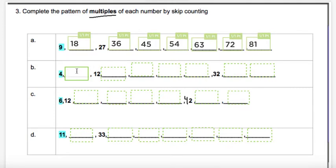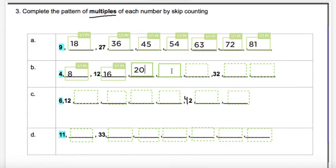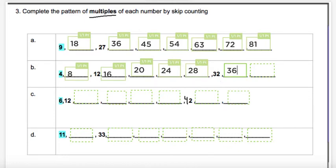Let's do part B. We are skip counting, finding multiples starting with four. What comes next? Eight. The next one was done for us, so we have four, eight, twelve. What comes after twelve? Sixteen. Keep going — twenty. Then twenty-four. Then twenty-eight. The next one was done for us: thirty-two. Add four more to thirty-two — thirty-six. Keep going — ending with forty.